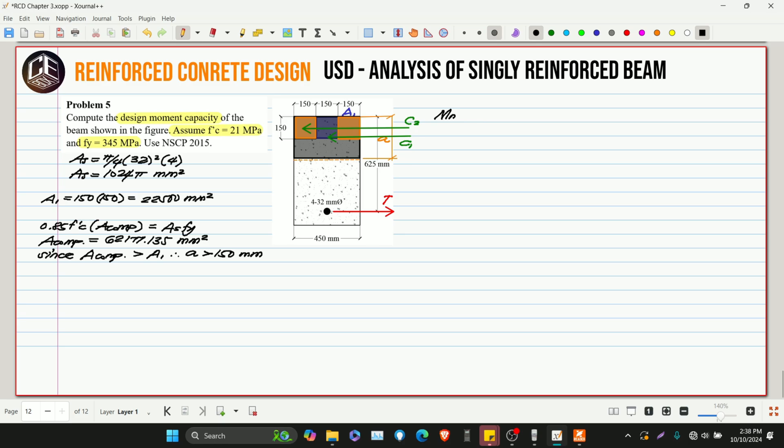So, our nominal moment is equivalent to C1 multiplied by D minus A over 2, then minus C2. We'll subtract C2, right? Multiplied by D minus 150 divided by 2. So that's half of 150 for its centroid. So, let's solve for A. How do we solve A? Our A can be solved by equilibrium.